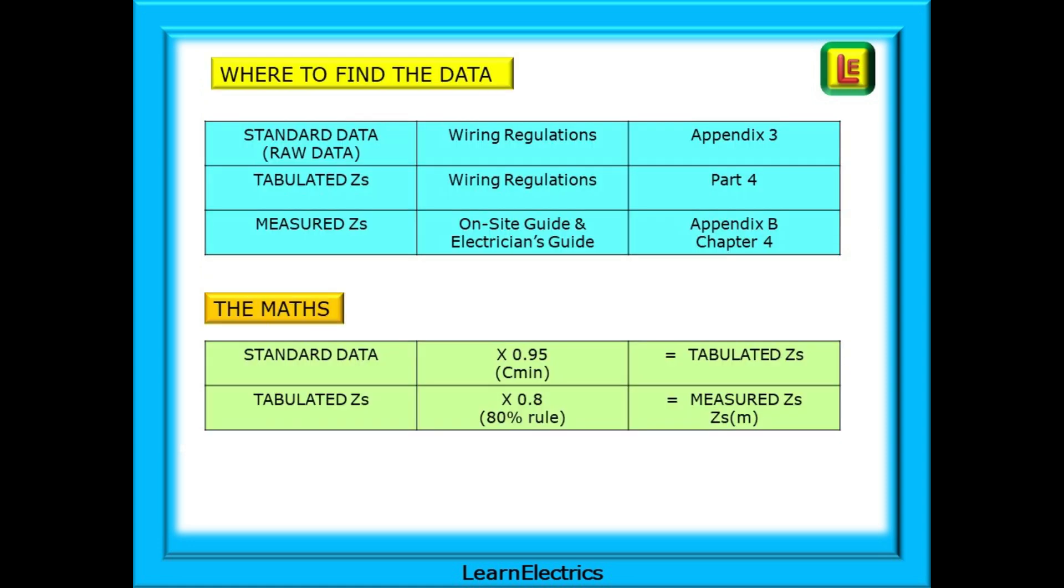These two tables here should serve as a reminder. Where in the books should you look to find the data? Most times we will not use the raw data. But you needed to know the starting point for working out ZS. Tabulated ZS is found in the wiring regulations book in part 4. And the 18th edition exam will expect you to use tabulated values unless the question asks otherwise.